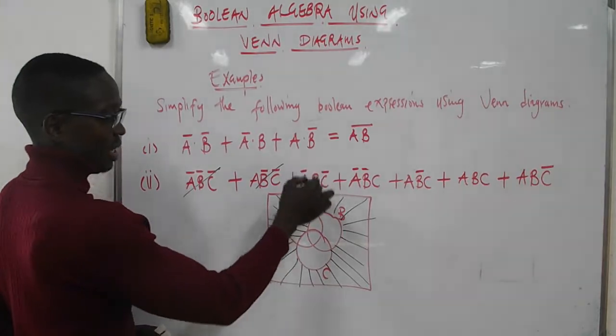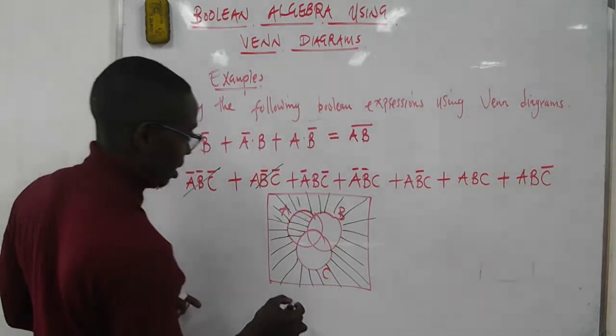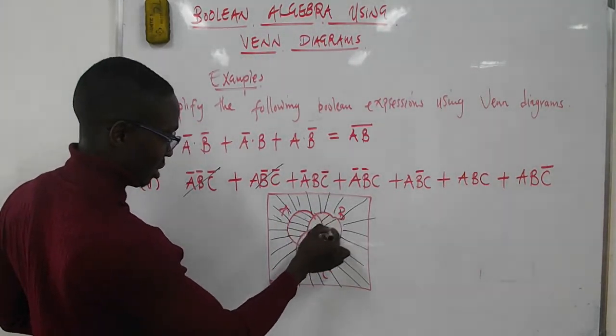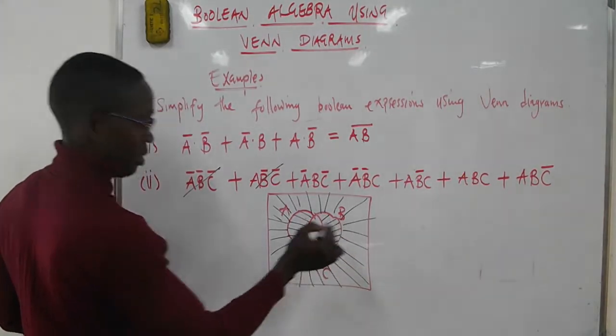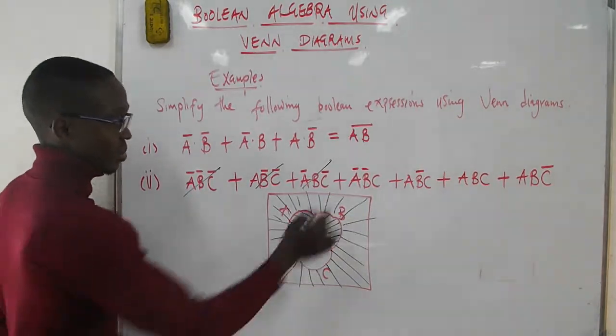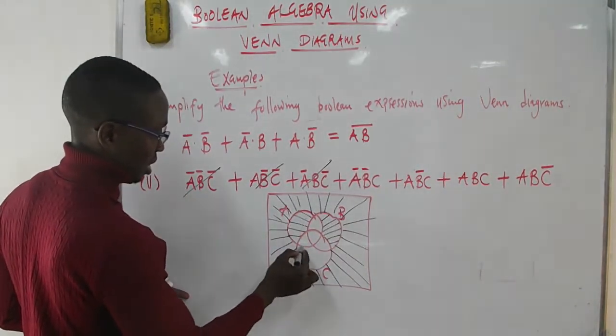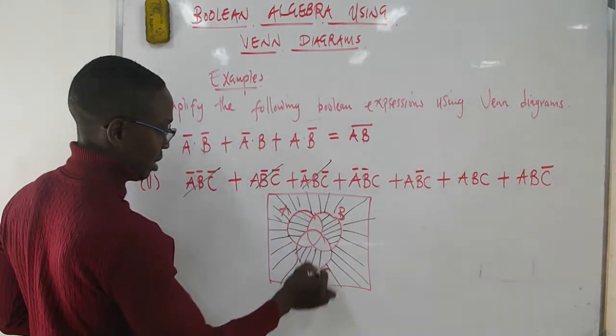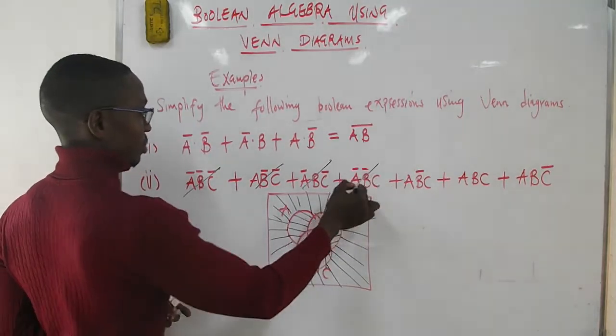For the next terms, only B appears while A and C do not - this region. Then only C appears while A and B do not appear - this region here.